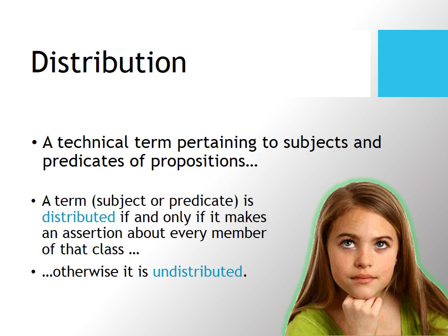Well, now I need to talk a little bit about distribution. That's a technical term pertaining to subjects and predicates and propositions. A term is said to be distributed just in case it makes an assertion about every member of that class. And remember, categorical sentences always involve two classes. One may be distributed and the other not. So if it doesn't tell you something about every member of a class, then it's going to be called undistributed.